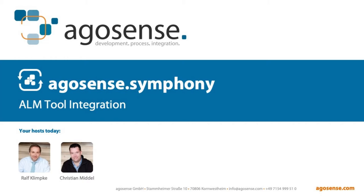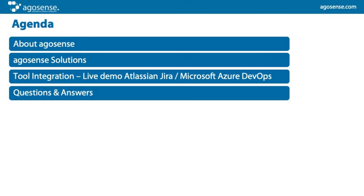Let's have a look at the agenda for today. First of all, we want to share a few words about Argosense and our solutions. After those slides, Christian will take over and show you a live demonstration of a combination of Atlassian Jira and Microsoft Azure DevOps, showing integration based on Argosense Symphony. After that we can have a question and answer session.